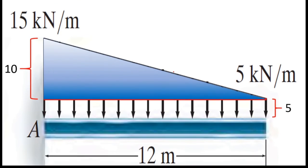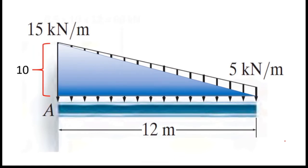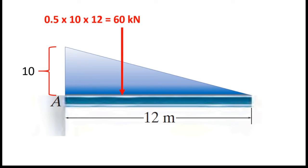Next I will consider the top part, which is the triangular part. This height is 10 and the beam length is 12 meters. I will consider that triangular part alone. I also have to find the resultant force using the same procedure — finding the area of this triangle, which gives the resultant force of this distributed load.